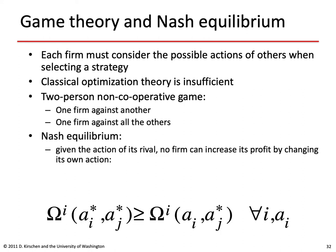In particular, we are looking for a Nash equilibrium: given the actions of rivals, no firm should be able to increase its profit by changing its own actions. For firm i maximizing profit ωi, we seek action ai* such that ωi(ai*, aj*) ≥ ωi(ai, aj*) for all other possible actions ai, and this condition holds for every firm in the market.